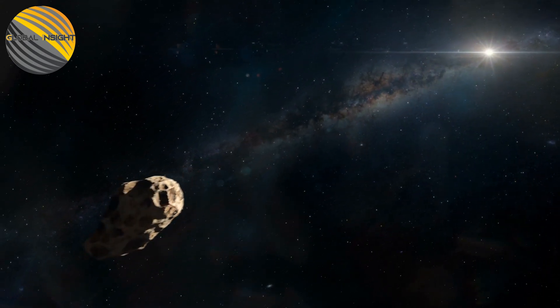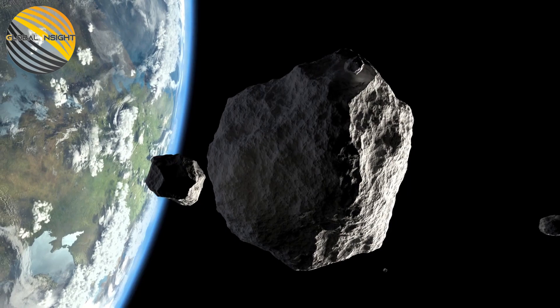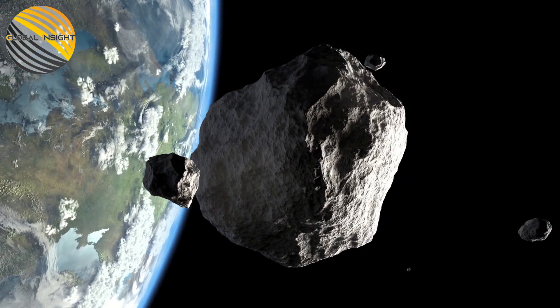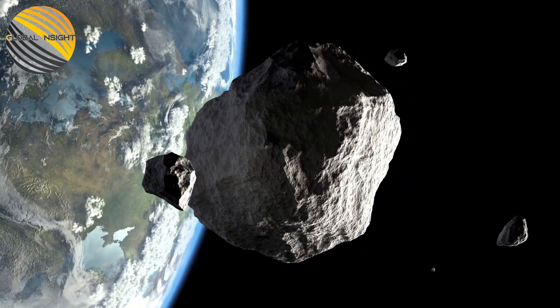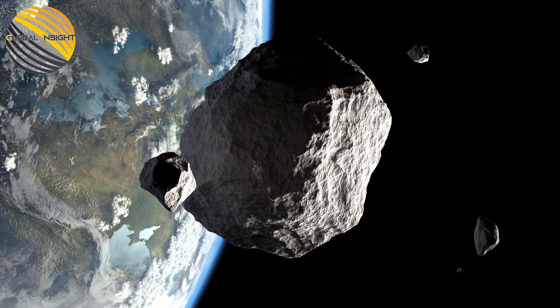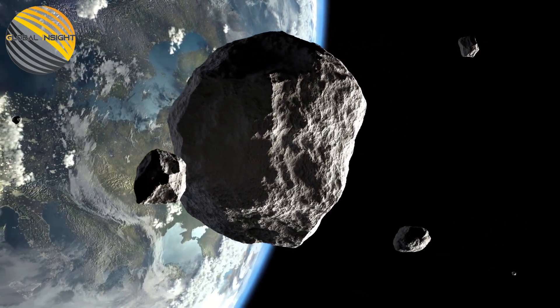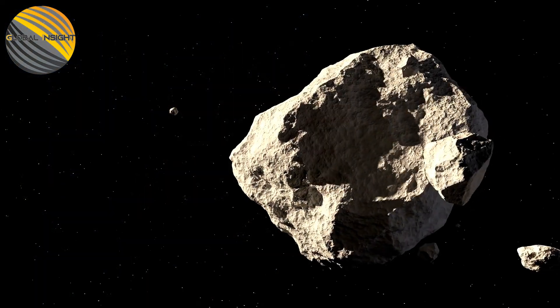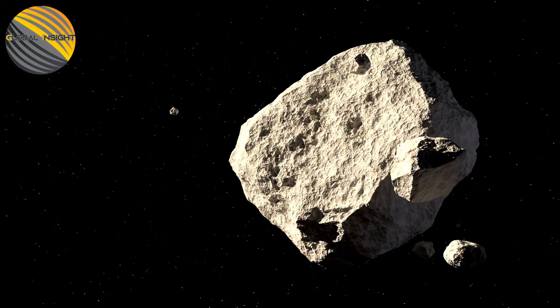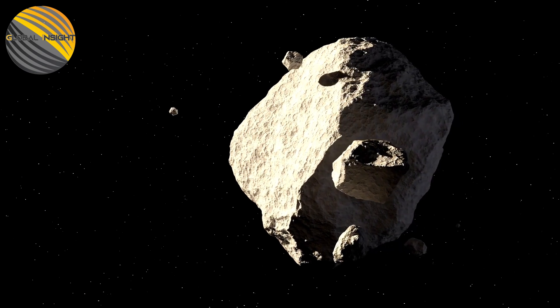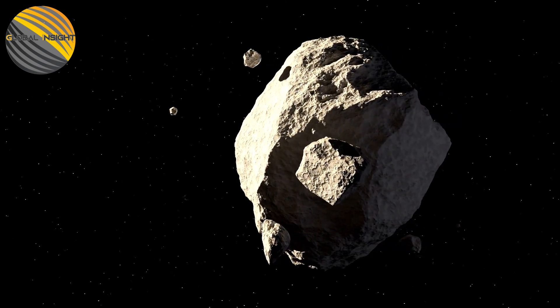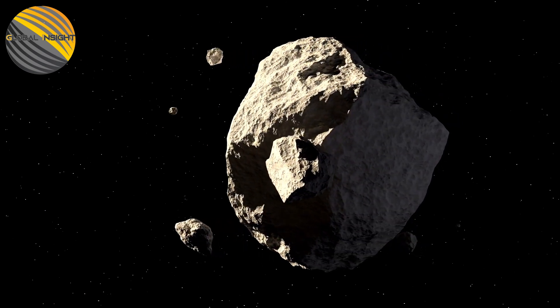Space agencies around the world are already thinking of ways to avoid an asteroid coming our way if astronomers ever spy on it. In the first test of Earth's planetary defense system, the Double Asteroid Redirection Test spacecraft rammed the non-hazardous asteroid Dimorphos off course on September 26. This altered the asteroid's orbit by 32 minutes.